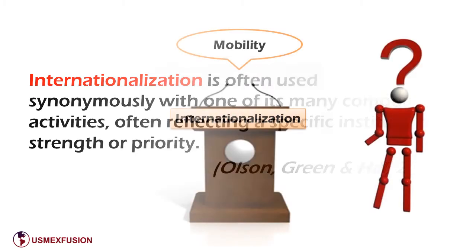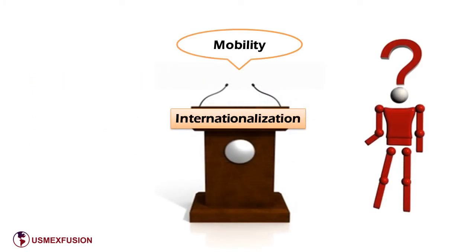For example, for some institutions or educational systems, international staff and student mobility could be an internationalization strategy, and in their discourse, when referring to internationalization, they refer to these activities only. Olson, Green, and Hill acknowledge that referring to the concept of internationalization by focusing only on one of its components fails to capture the multiple dimensions of internationalization and the processes needed to ensure that it penetrates the institution's activities and ethos both broadly and deeply.